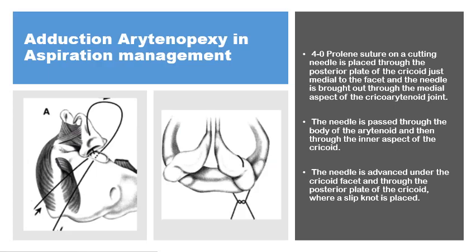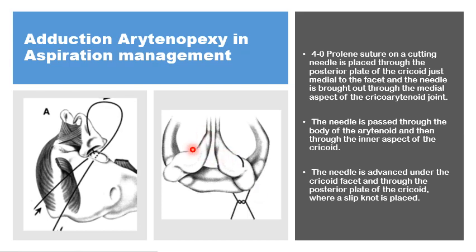Another medialization procedure for the arytenoid in posterior glottic gaps is adduction arytenopexy, in which the cricoarytenoid joint is opened. A 4-0 prolene suture on a cutting needle is passed through the posterior plate of the cricoid, retrieved through the medial part of the cricoarytenoid facet, then passed through the cricoarytenoid and out through the posterior plate of the arytenoid again. A slip knot is tightened, adducting and fixing the arytenoid in the adducted position to help control the posterior glottic gap.